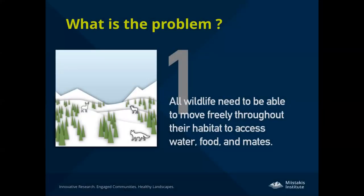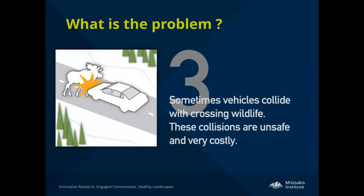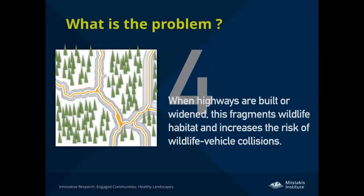The problem is that animals have a need to move freely throughout the landscape to access food, shelter, and to find mates. But when they're traveling throughout the landscape, they come across roads and have to find ways to safely cross them. All too often, wildlife come into conflict with vehicles and get hit. This causes risky situations for humans, direct mortality to wildlife, and also fragmentation impacts — as more roads get built or highways get widened, it increases the fragmentation that wildlife face.